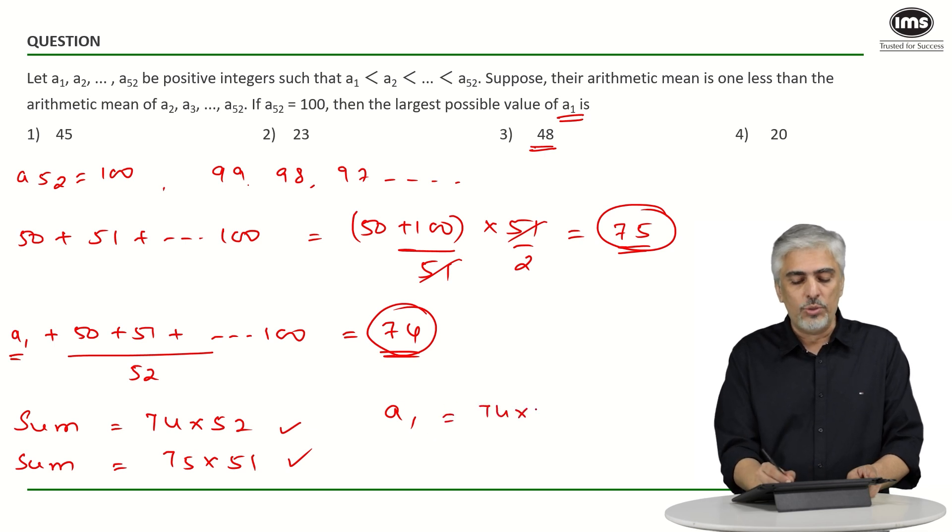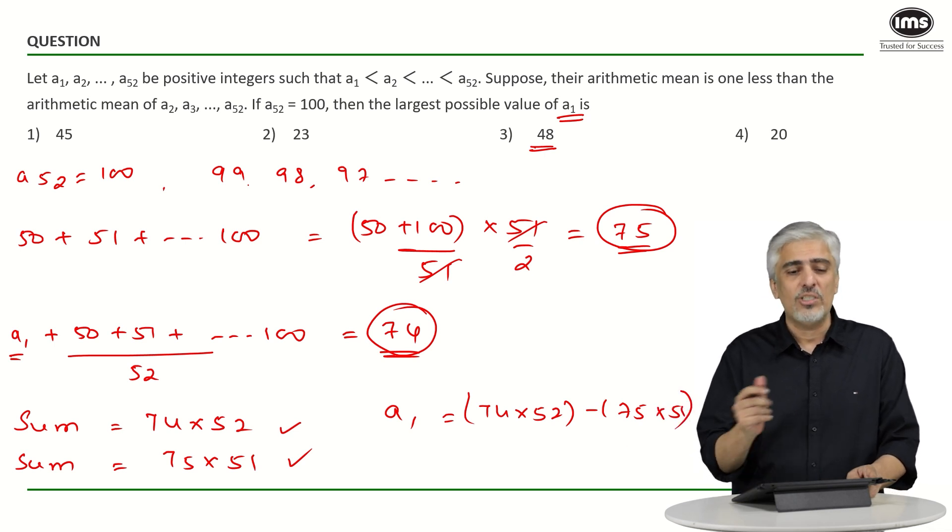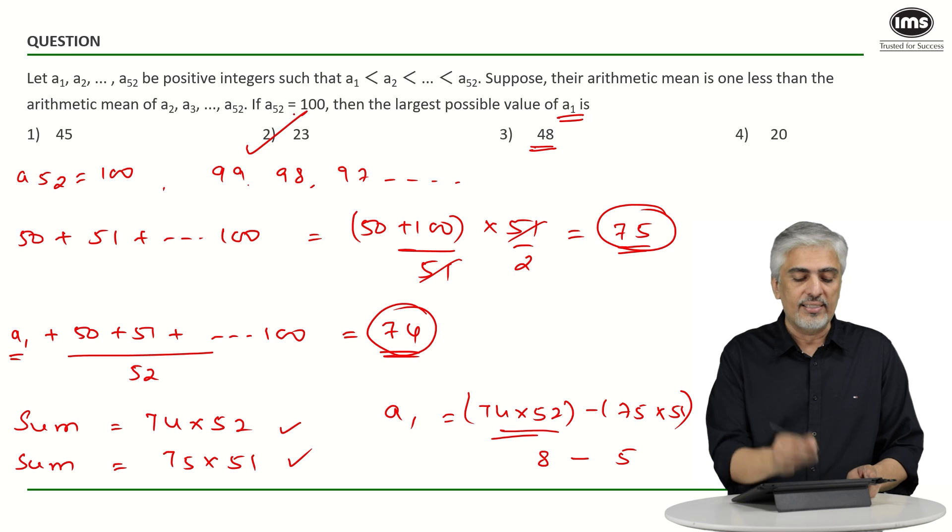74 into 52 minus 75 into 51. When I was doing this calculation, I thought let me just look at the options. This term ends in 8, this term ends in 5, and there is only one option ending in 3, which is my answer, second option.